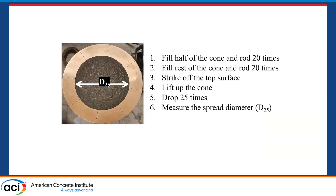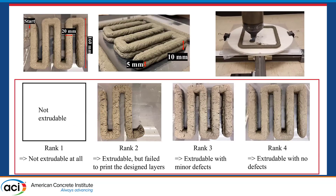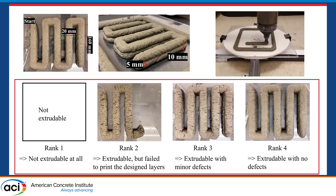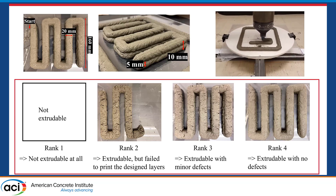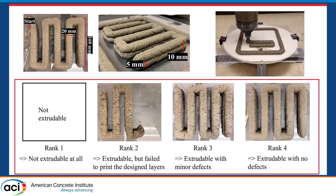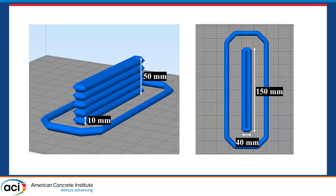We measured flowability using the flow table test, and the spread diameter was used as the flowability measure. Then we printed two layers, each containing five spread lines. Based on visual inspection, we gave a rank to each mix. If the mixture was not extruded at all, it received rank 1. If it was extruded without any defects, it received rank 4. For well-extruded mixes, we measured buildability in terms of deformation, which refers to the difference between the design height and actual sample height.